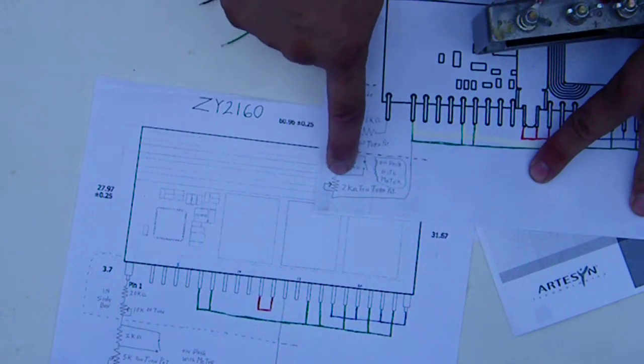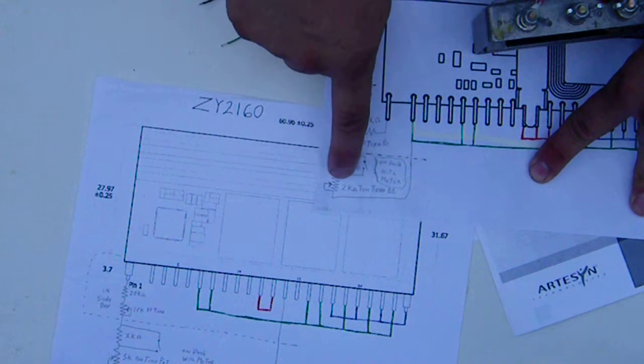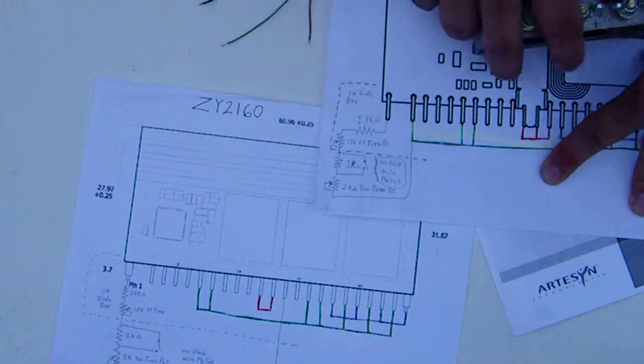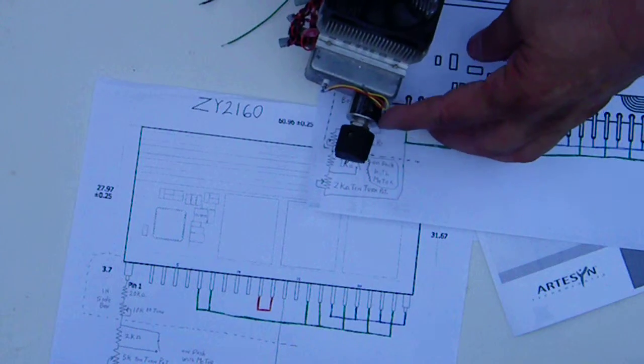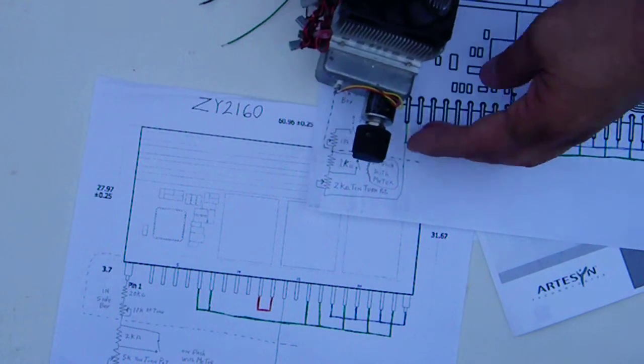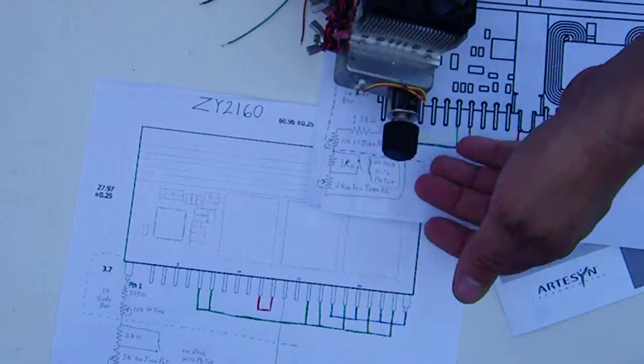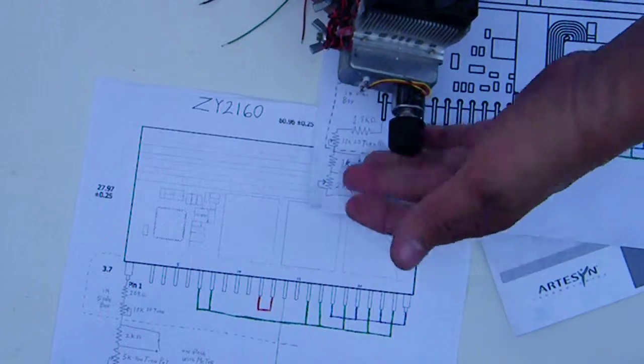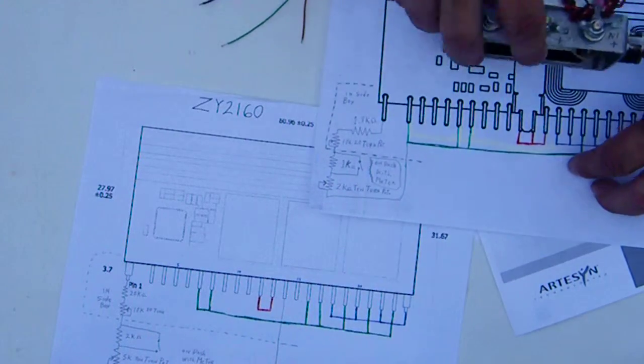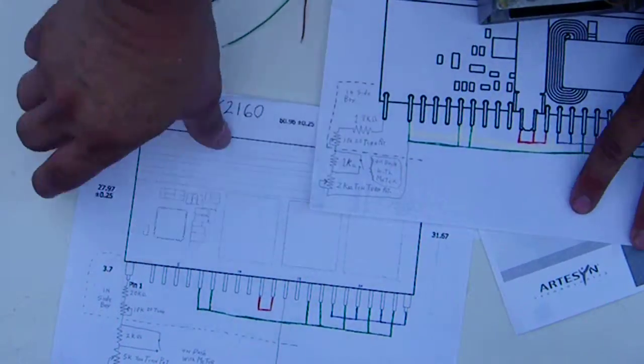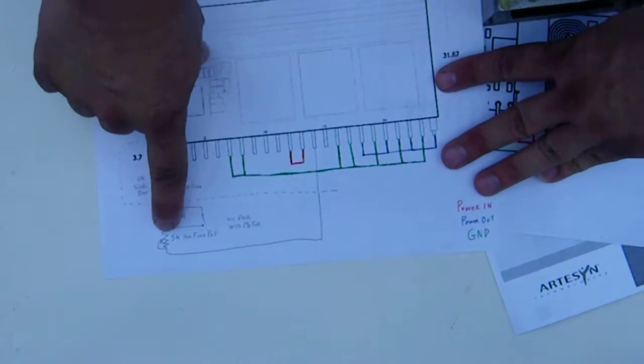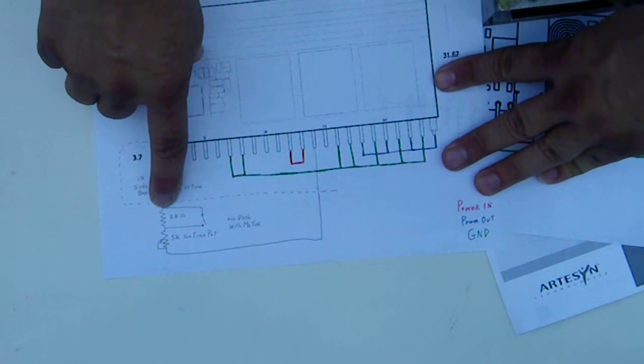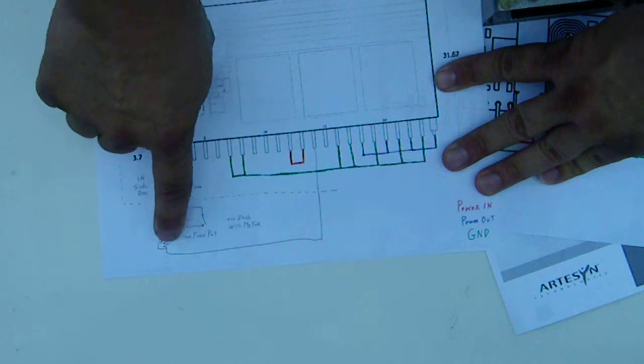This one here, sorry I didn't mention it, 1K and a 2K adjustable. This is a 10 turn pot, looks like this one. Okay, you can actually turn it a whole bunch of times. It's 10 turn, so it's very adjustable. So you need a 5K for this one and a 2K resistor to turn on and off for your heat.